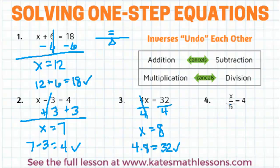So to undo dividing by 5, I need to multiply both sides by 5. So multiplying by 5 and dividing by 5, those cancel, and I get x equals 20.